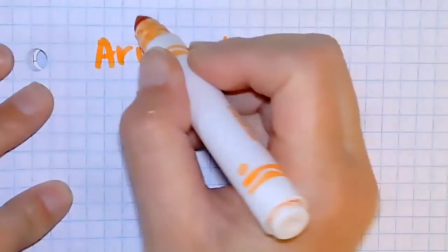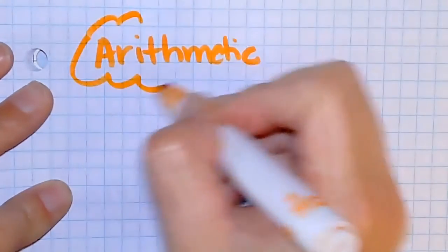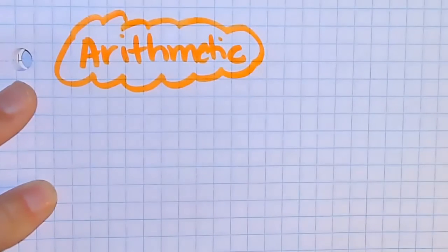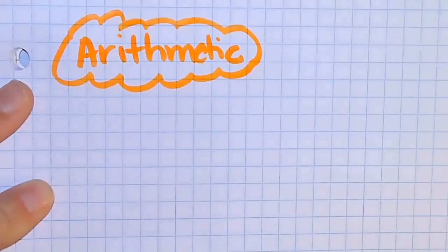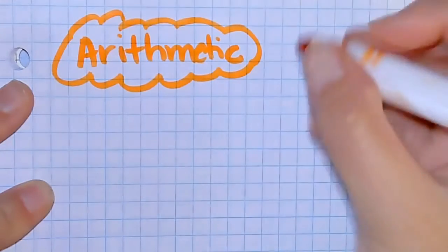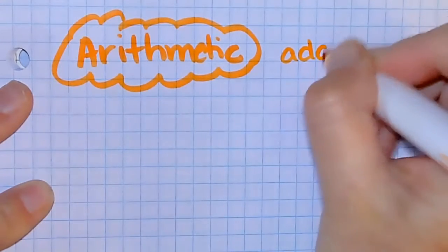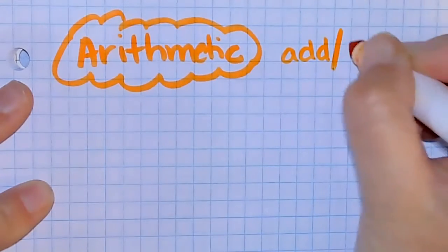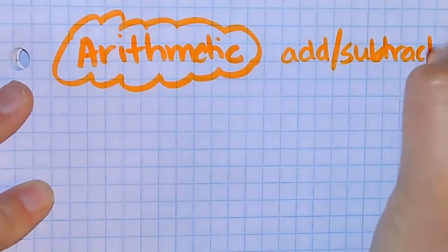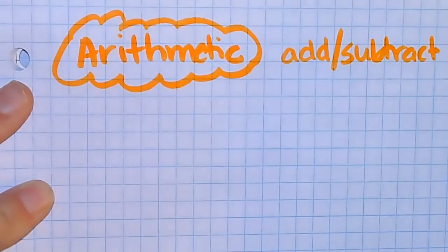I'm just making a quick little video to make sure everyone understands how to find the recursive and explicit equation for an arithmetic sequence. An arithmetic sequence is when you're either going to be adding or subtracting to get the values in your sequence.